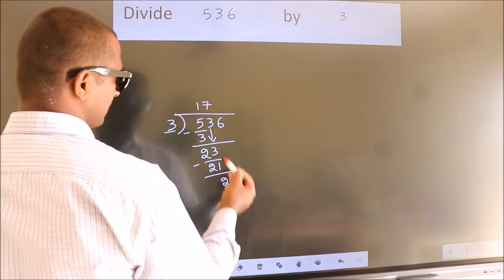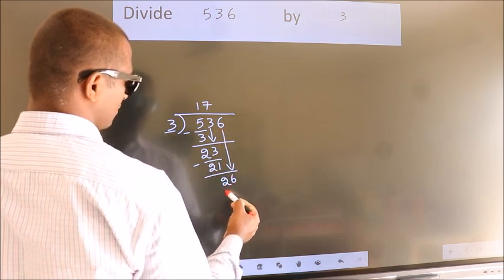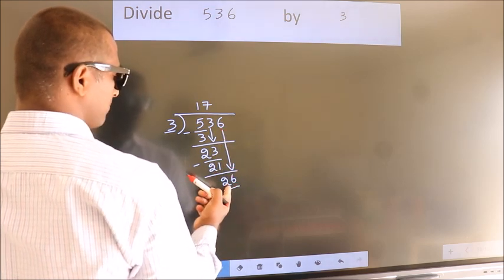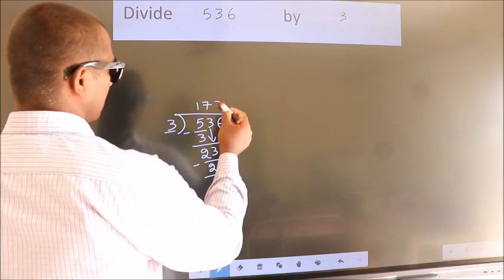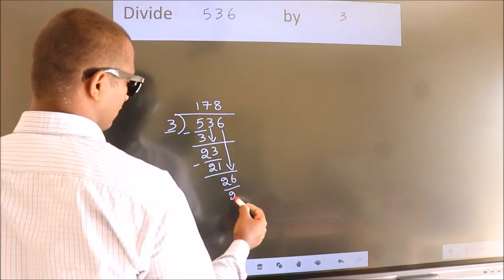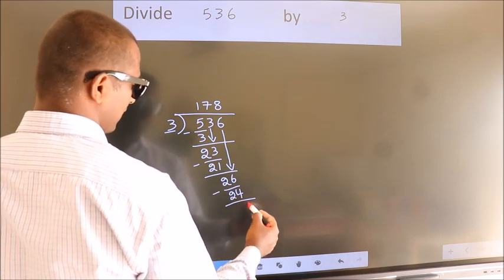After this, bring down the beside number. So, 6 down. So, 26. A number close to 26 in the 3 table is 3 8s 24. Now we subtract. We get 2.